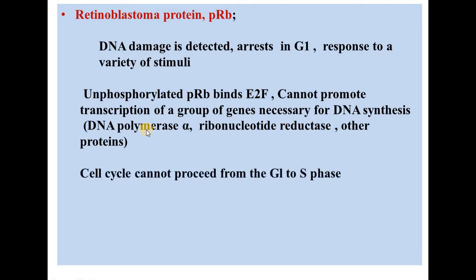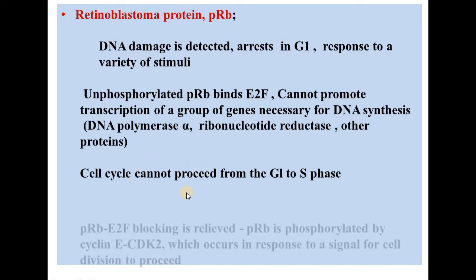Because E2F was responsible for making genes necessary for DNA synthesis, the cell cycle will not proceed from G1 to S phase. The transcription needed for S phase is blocked from here, so the cell cycle will not proceed past G1.